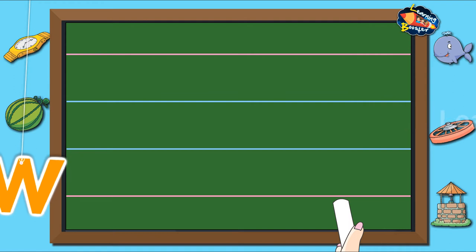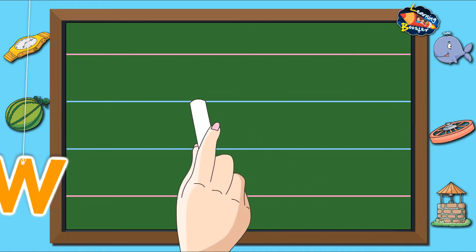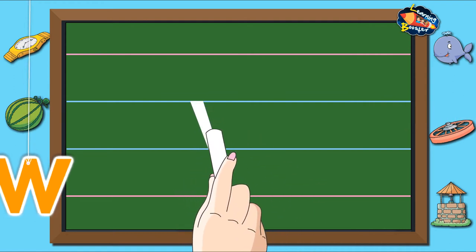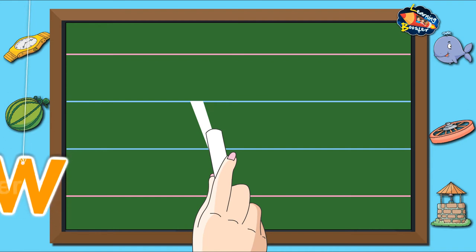Letter W. Start from the waistline and make a slanting line to the right till the baseline.